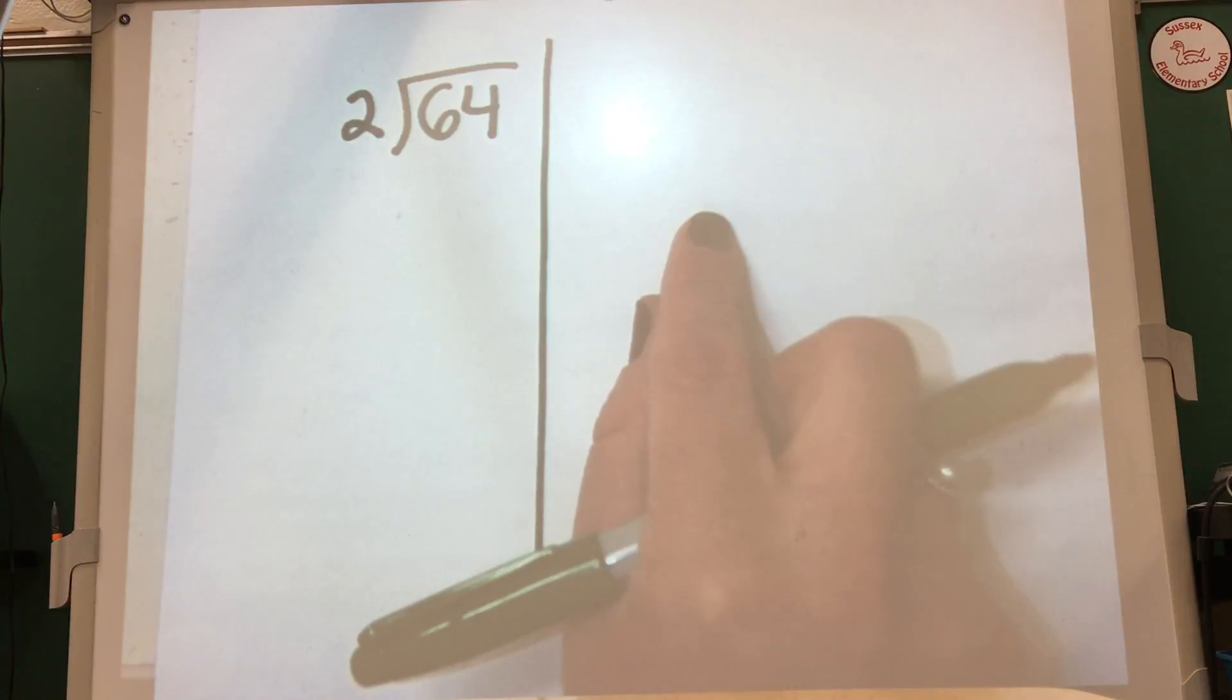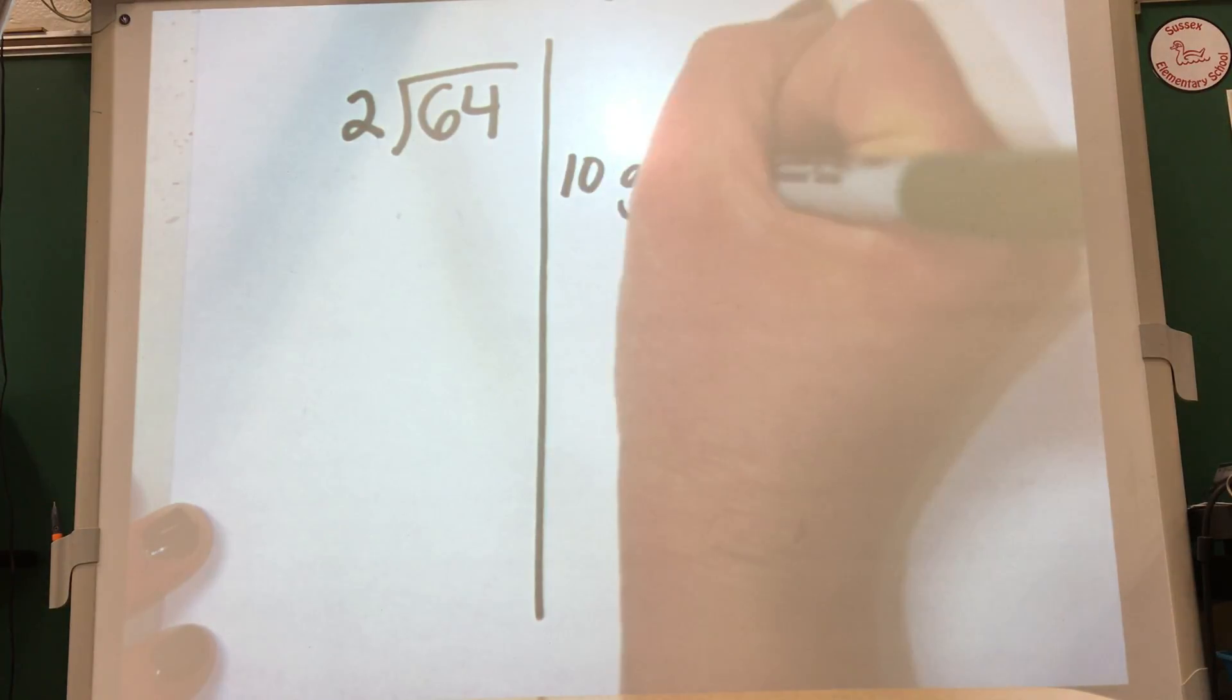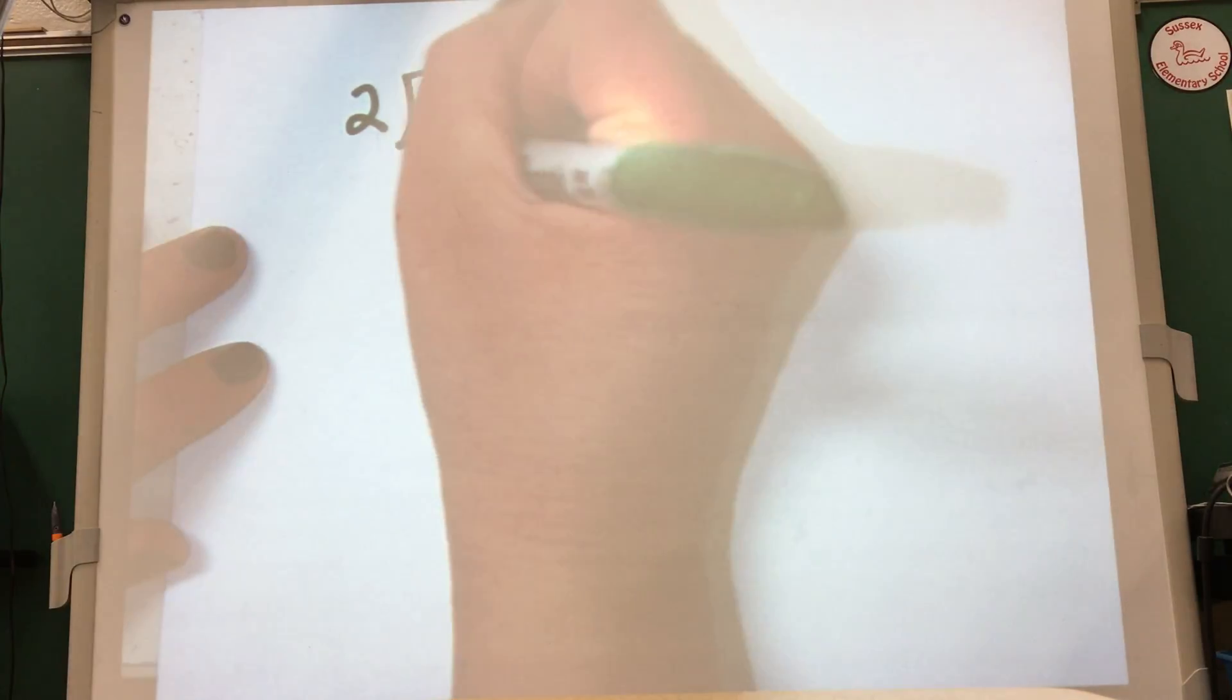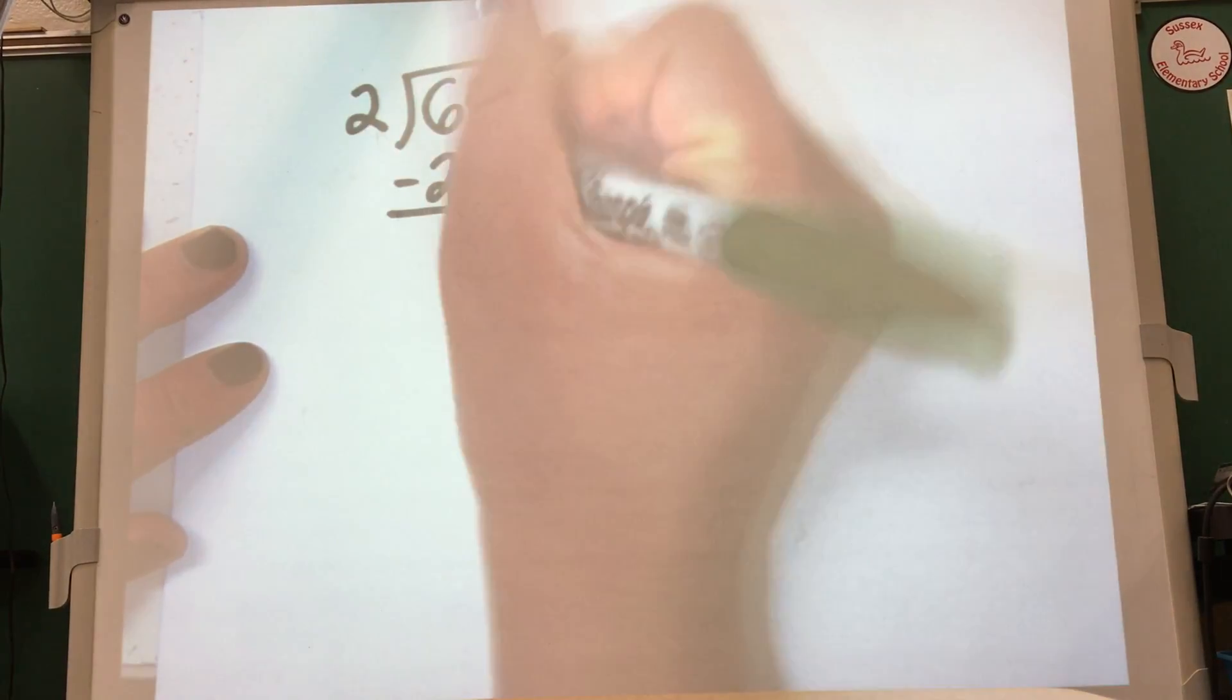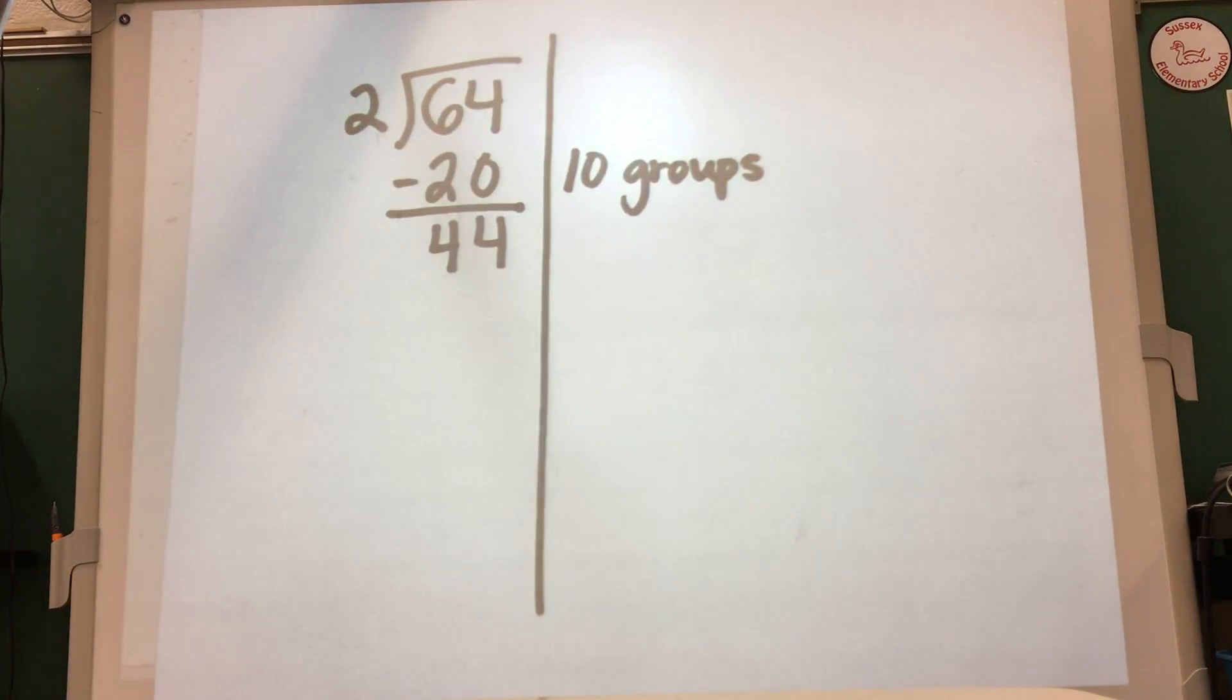On this side I'm going to be trying to pull out groups of 2. Division is repeated subtraction, so the students are trying to subtract out groups of 2 until they get down to 0. Their answer will be how many groups of 2 they were able to pull out. So I'm always going to start by 10. If I pull out 10 groups of 2, 2 times 10 is 20, so that means they can subtract out 20 from the total. They're left with 44.